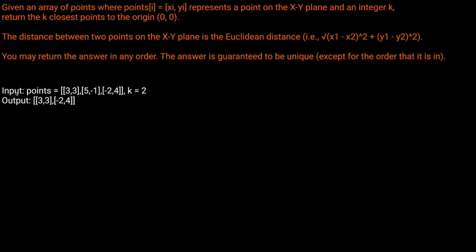So if we're given the points (3, 3), (5, -1), (-2, 4) and k equals 2, what should we return? Well, let's calculate the distance for each one of these points. So the first one is going to be (3, 3).